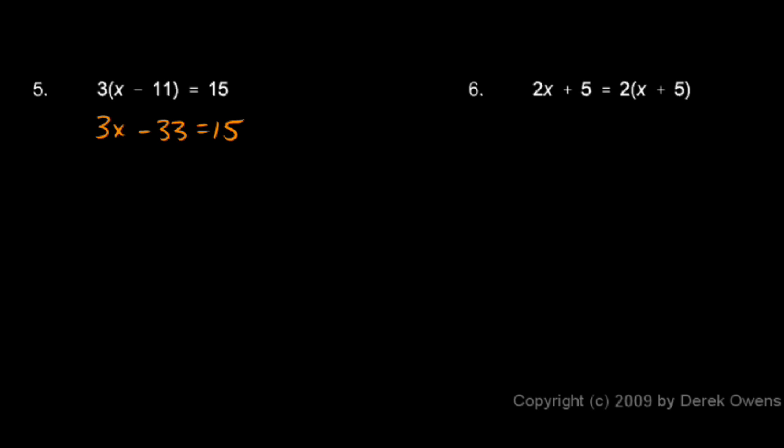And then we can add 33 to each side. And on the left side the minus 33 will go away, and on the right side we'll have 15 plus 33 which is 48. So that gives us 3x equals 48.